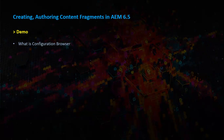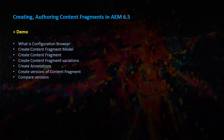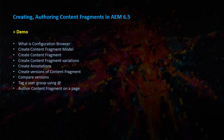In this demo we are going to see: what is the configuration browser, how to create a content fragment model, then create a content fragment, create content fragment variations, create annotations, create versions of a content fragment, compare the versions, tag a user group using the at-annotation, author a content fragment on a page, and access a content fragment using the default JSON exporter framework.